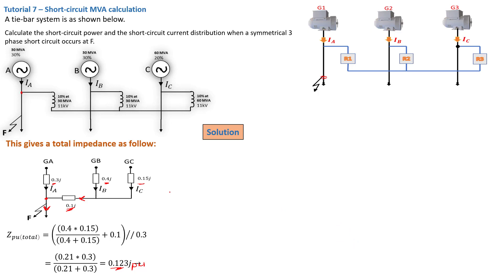From here, we know that we are chasing the short circuit current. The short circuit current I_sc is given by the formula: I per unit times I line. You still have two unknowns — I per unit and I line. Now, I per unit is a given: that is 1 over Z per unit.